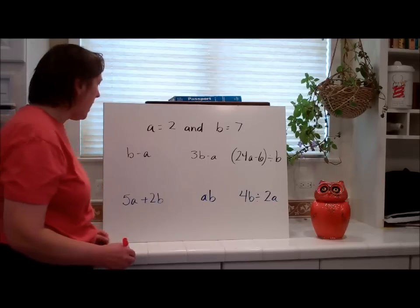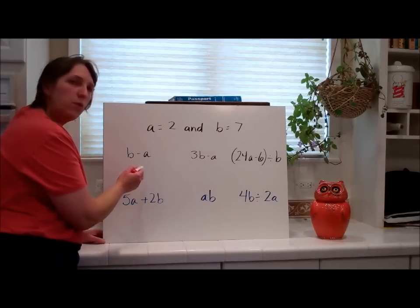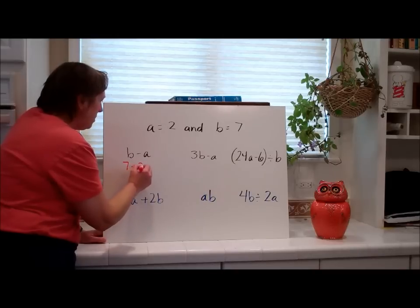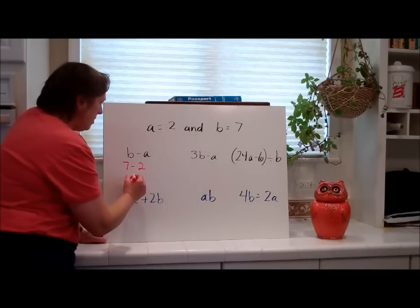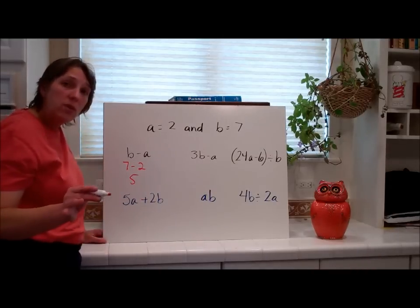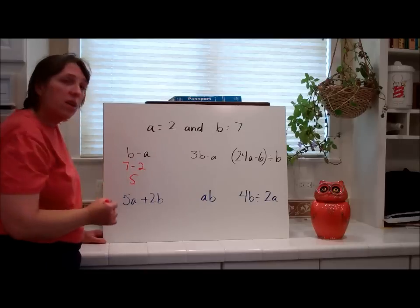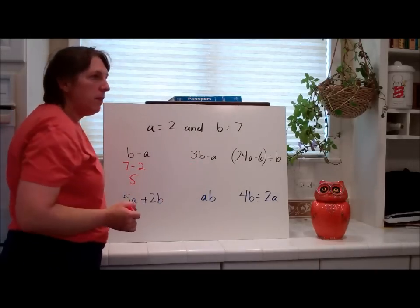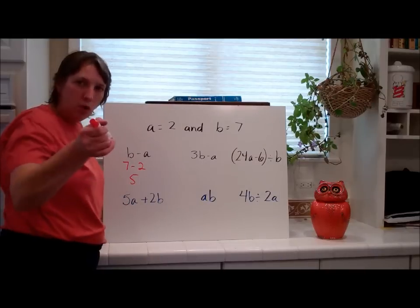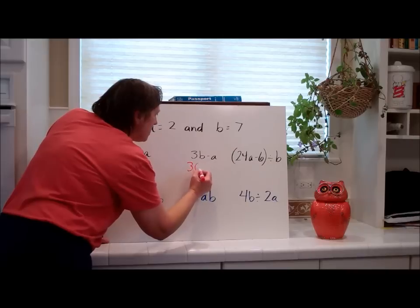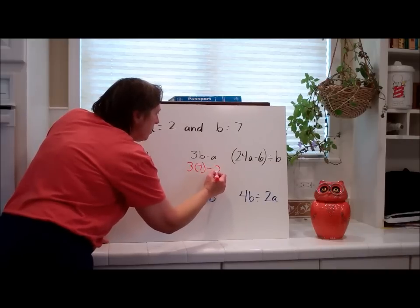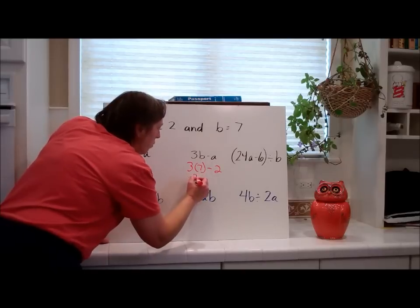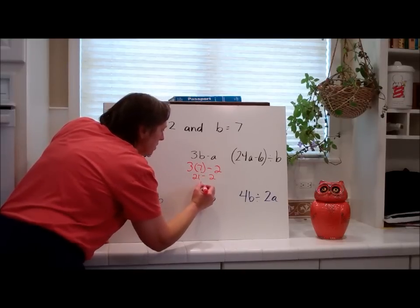Welcome back. You have to write B minus A. B is 7 and A is 2, so 7 minus 2 is 5. I'm doing everything vertically. What does 3B mean? Multiplication. So we say 3 times 7 minus 2. Order of operations: 3 times 7 is 21, minus 2, which is 19.